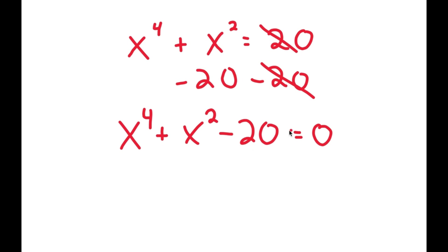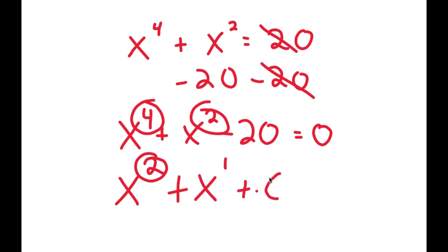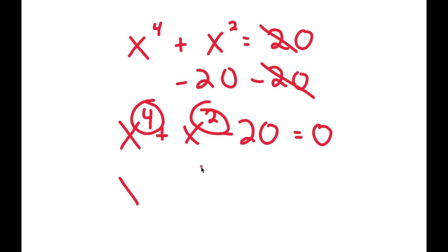Now this may seem like a quadratic equation, but it's not, because we have the power of 4 as our primary term, and then that's followed by the power of 2. In a normal quadratic equation, we have 2 as our primary, then we just have 1, and then we have some constant C. So how are we going to solve this?